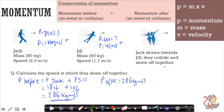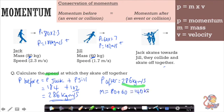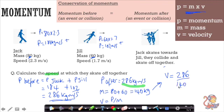To find their speed after the collision, we need the momentum and the combined mass. The combined mass of Jack and Jill is 80 plus 60, which is 140 kilograms. Rearranging to v equals p divided by m: velocity equals 286 divided by 140, giving a speed of 2 meters per second. That is the speed at which they skate off together.